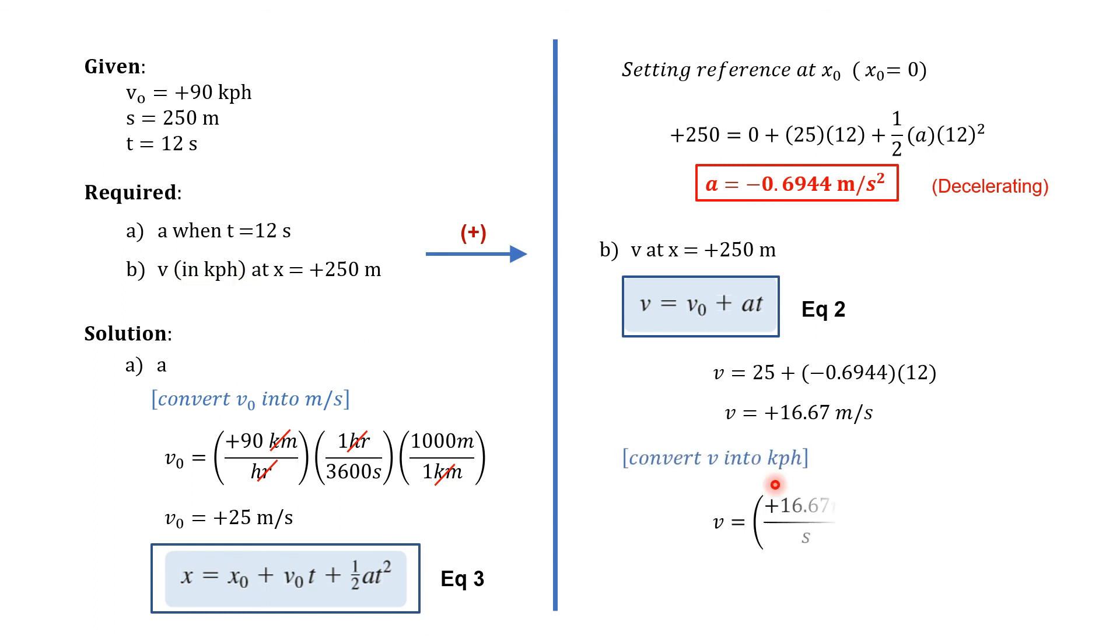So we need to convert this value that we obtained. So we'll multiply by the conversion factors to cancel the unit of second and meter. So our final answer will be equal to positive 60 kph. And based on the second requirement in the problem, what is being asked is the final speed.